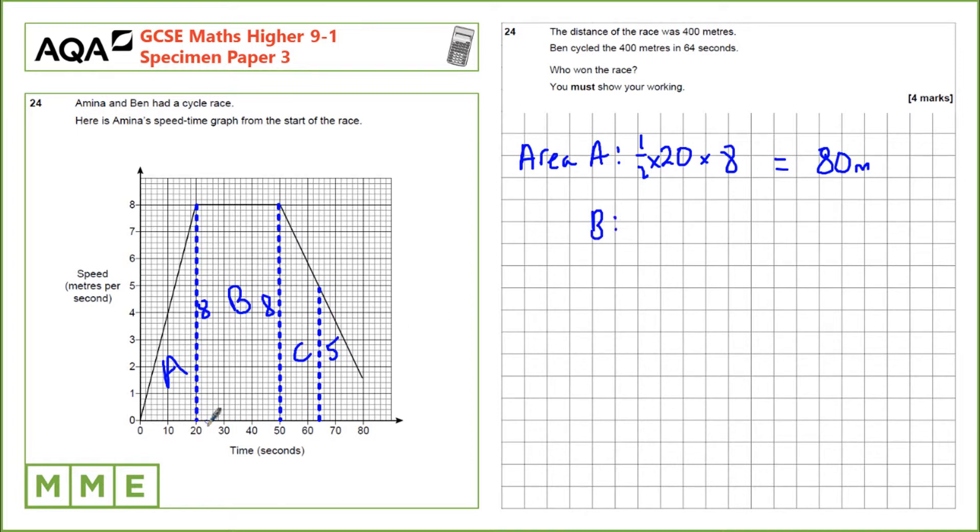For the area for B, that's the distance here. So that's 30 seconds times by 8 metres per second, which is 240 metres.